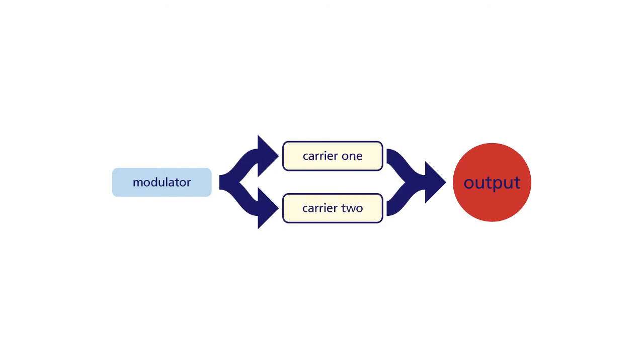The first new configuration uses parallel carriers. With this combination, there is one modulator and two carriers. The modulator modulates both carriers and the carriers are both connected to the output, so it's like two simple stacks, but with a common modulator.